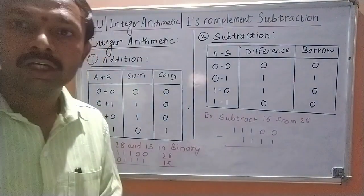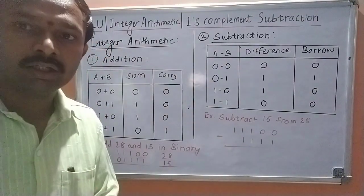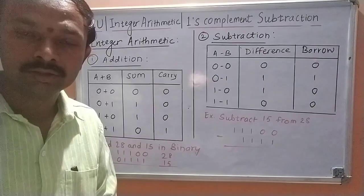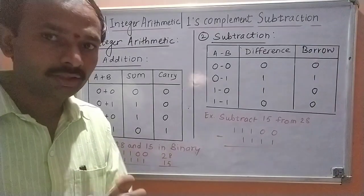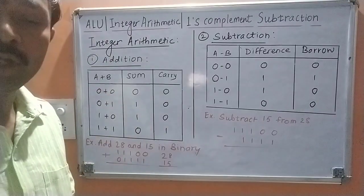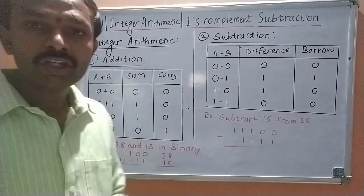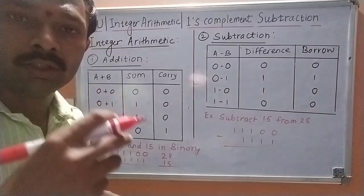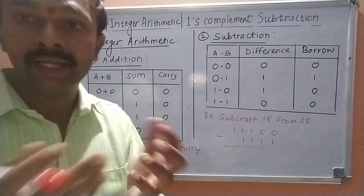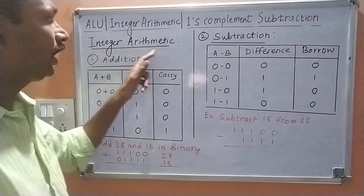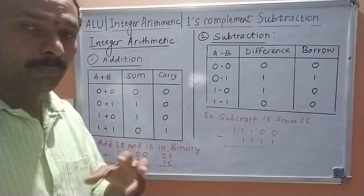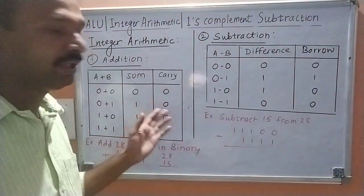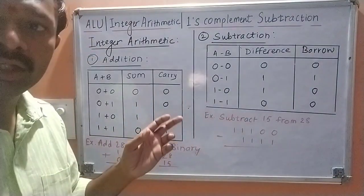Integer arithmetic will be studied in this video. Inside integer arithmetic, the important thing is that we are performing operations on integer values. Integer values are all the positive and negative numbers available to us. Whatever operations we perform in binary on those integer numbers are called integer arithmetic operations. Before studying the integer arithmetic operations, the things that are required are mentioned here with the help of two different tables.